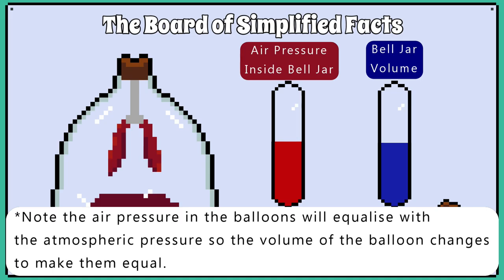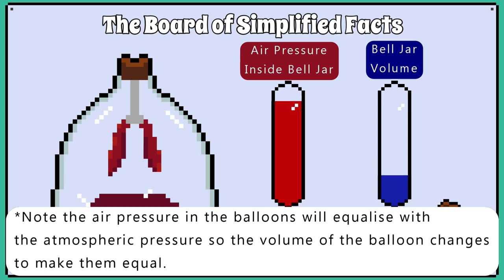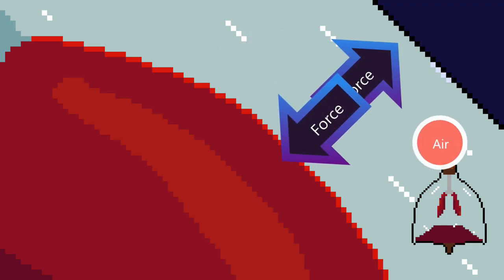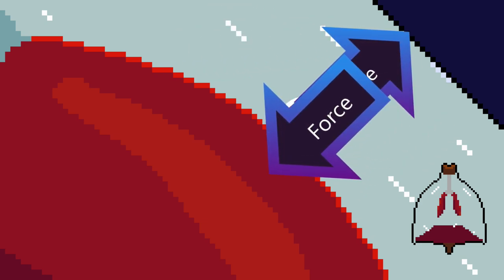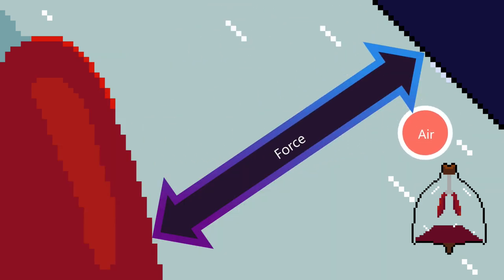When we push the rubber sheet up to mimic the diaphragm relaxing and doming upwards, it decreases the volume of the bell jar and increases the air pressure. The air particles have less space to move around in, so they exert more pressure on the outside of the balloons, causing them to deflate.